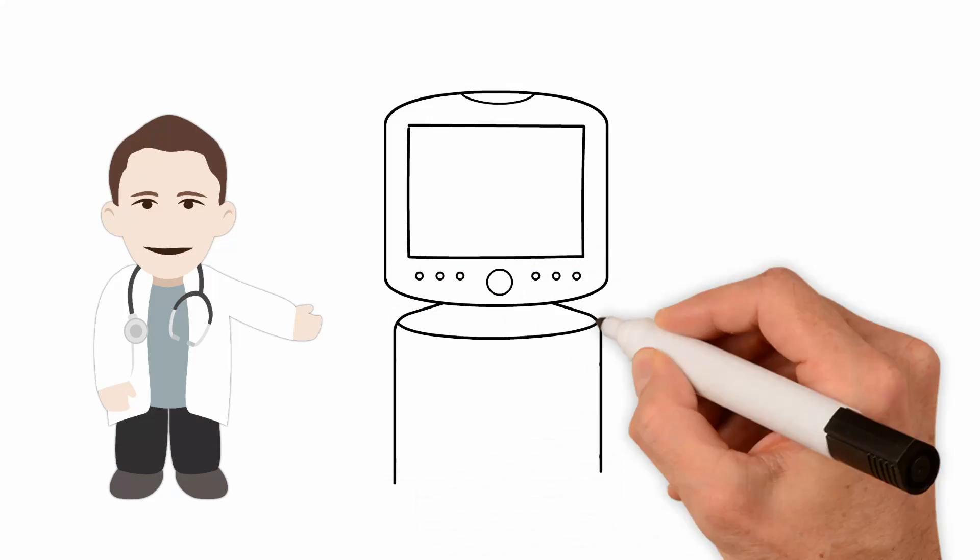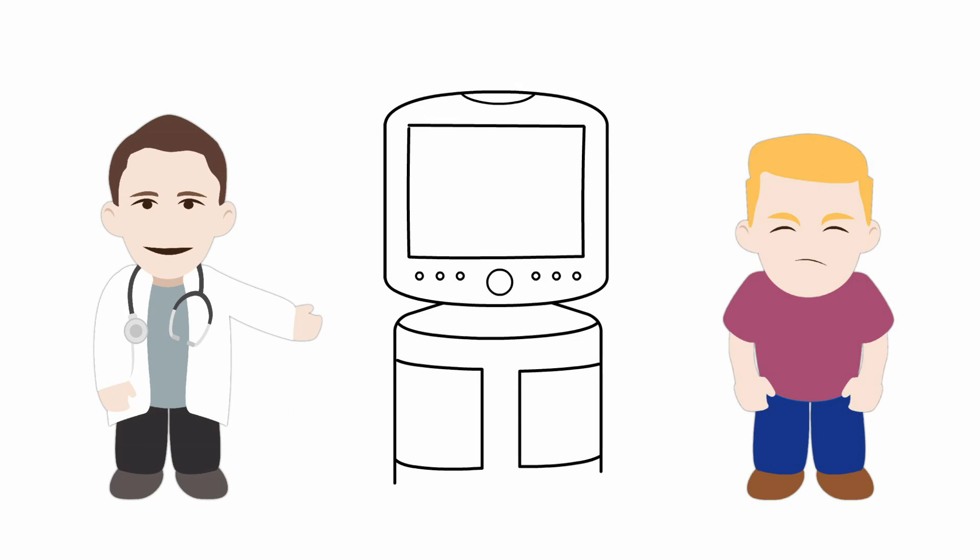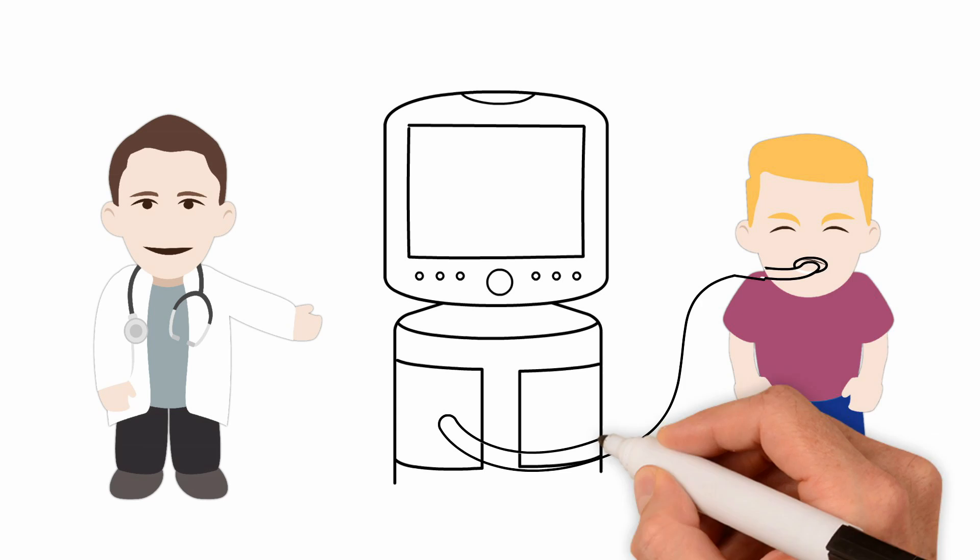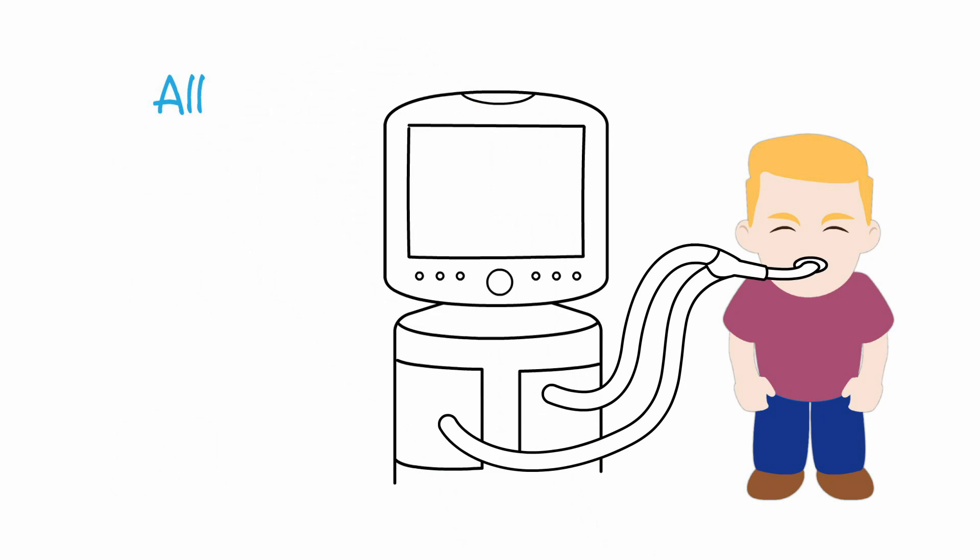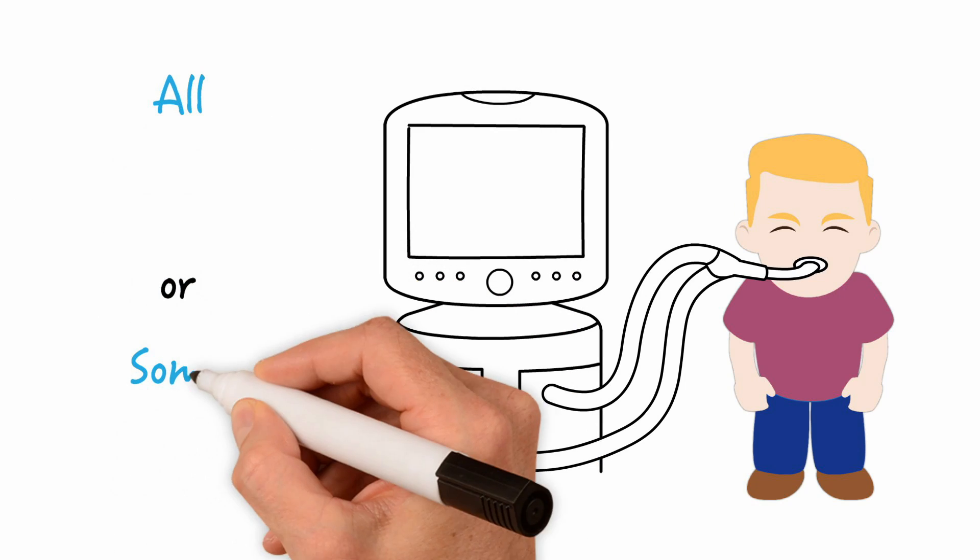So what is a mechanical ventilator and why would we need to place a patient on it? A mechanical ventilator is a life support machine that breathes for the patient. It can assume all of the work of breathing or some of the work of breathing.